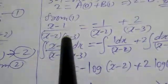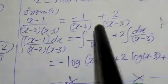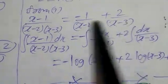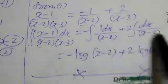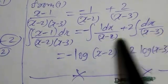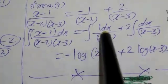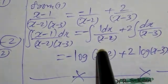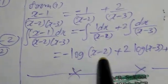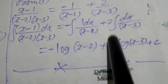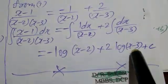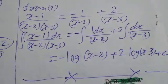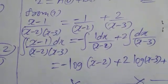Again putting A and B values in equation 1 and applying integration on both sides: the answer is minus log(x minus 2) plus 2 log(x minus 3) plus C.